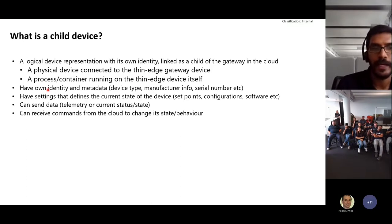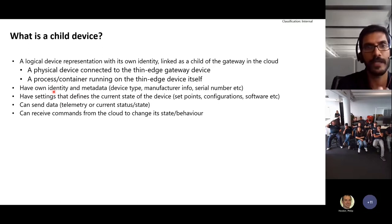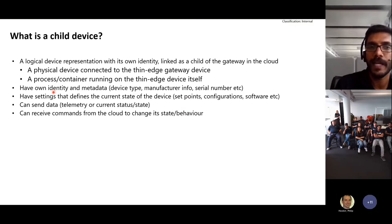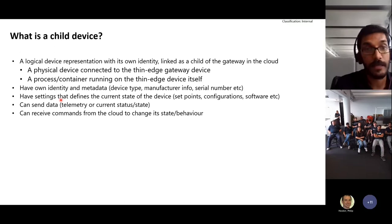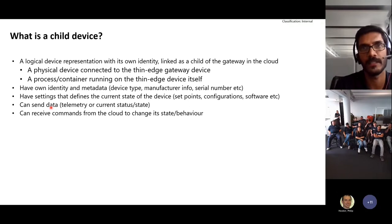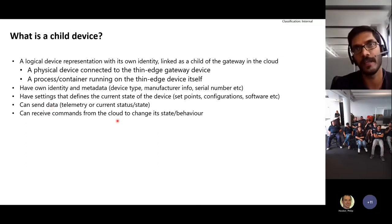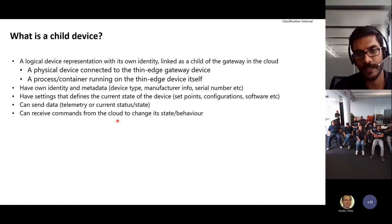What do you need with a child device? They need their own identity and their own metadata — device type, manufacturer info, serial number, etc. They'll have their own settings different from the gateway device, like set points, configurations available on the device, or software installed on the device. These devices can send data — either telemetry data or data representing state changes — and they can also receive commands from the cloud to change the device's behavior, as in the case of actuators.